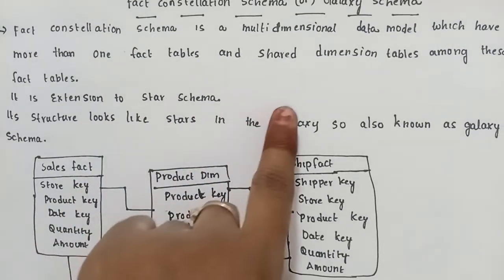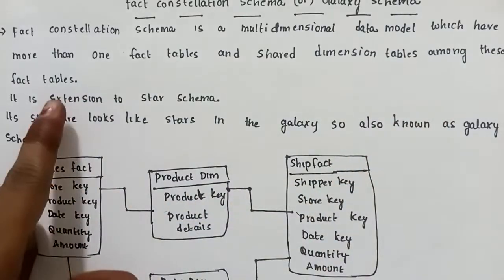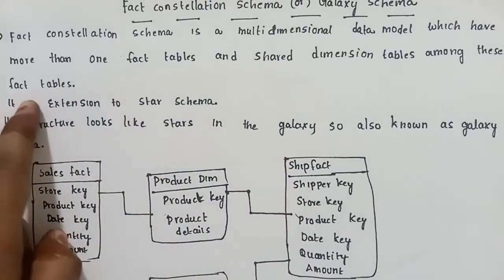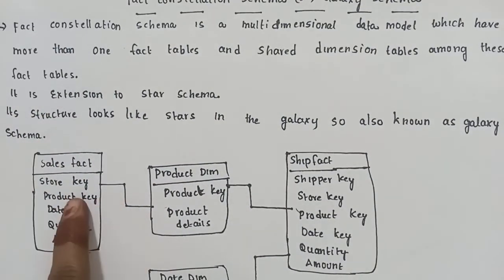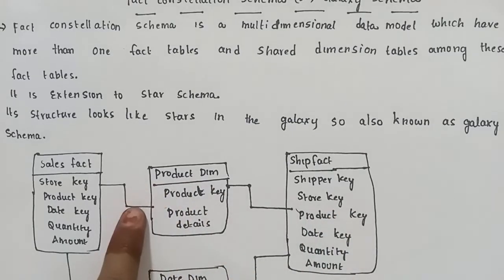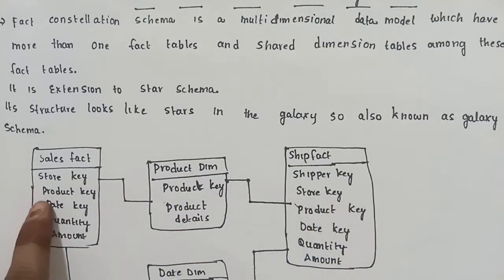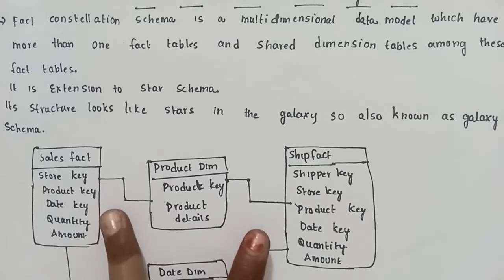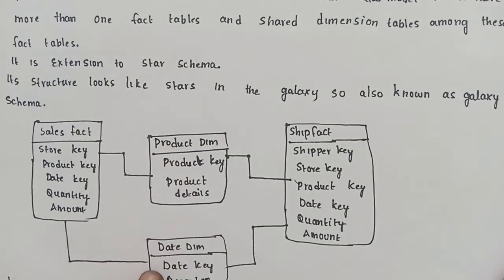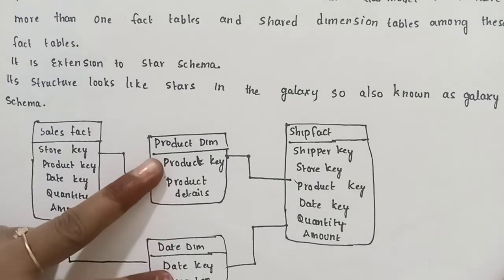So fact constellation schema is a multidimensional data model which has more than one fact table and shared dimension tables among the fact tables. Here, two fact tables - sales and shipment - share two dimension tables: product and date.